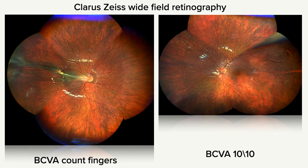The wide-field retinography taken with the Clarus Zeiss retinographer showed a huge retinal fold extending from the papilla crossing the macula all the way to the temporal side in the right eye.